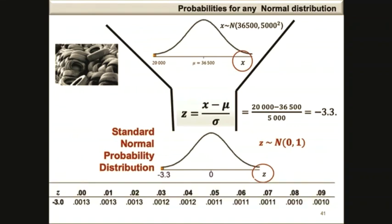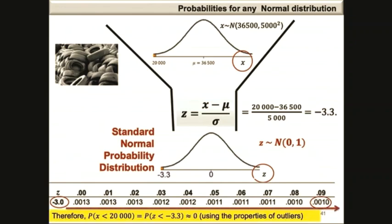Looking at the z-score table, the last row of negative values goes from minus 3 and the smallest probability on that row is 0.001, which is obtained as z values become much smaller. This indicates that any value of z less than minus 3 will have a probability that is approximately 0, which is consistent with the property of outliers.